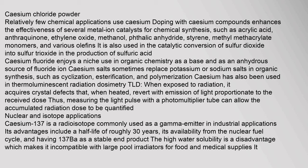Relatively few chemical applications use caesium directly. Doping with caesium compounds enhances the effectiveness of several metal-ion catalysts for chemical synthesis, including acrylic acid, anthraquinone, ethylene oxide, methanol, phthalic anhydride, styrene, methyl methacrylate monomers, and various olefins. It is also used in the catalytic conversion of sulfur dioxide into sulfur trioxide in the production of sulfuric acid. Caesium fluoride enjoys a niche use in organic chemistry as a base and as an anhydrous source of fluoride ions. Caesium has also been used in thermoluminescent radiation dosimetry (TLD).